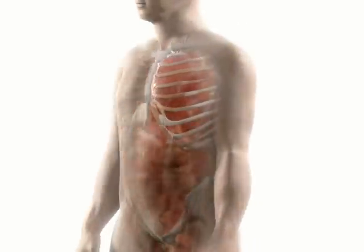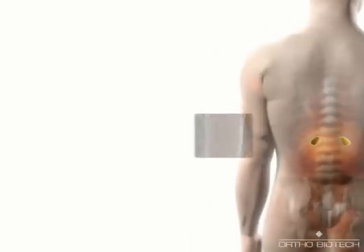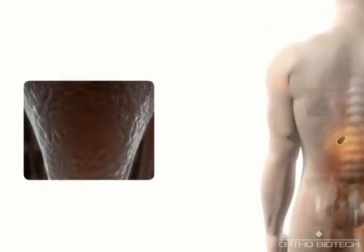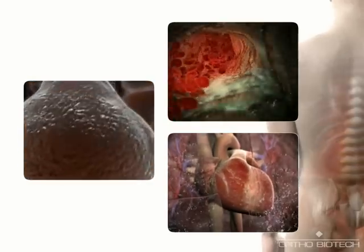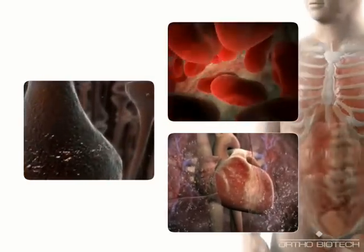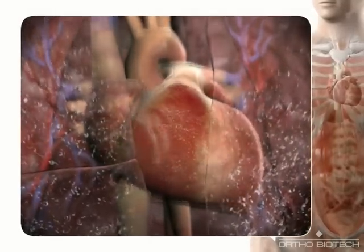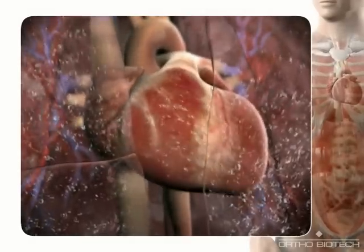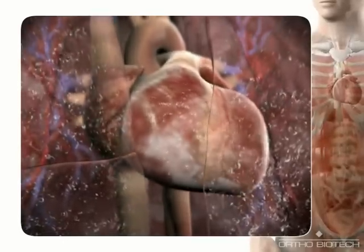Apart from the activity of the RAAS, the body tries to maintain blood pressure using other mechanisms, such as releasing epinephrine from the adrenal glands and norepinephrine from sympathetic nerve endings. These catecholamines increase heart rate and contractility, in addition to causing arterial and venous constriction. Over time, chronic volume overload and the activity of angiotensin 2, aldosterone and endothelin stimulate pathologic cardiac remodeling. The interstitial fibrosis and myocyte apoptosis associated with cardiac remodeling decrease heart wall elasticity, further inhibiting the heart's ability to relax and pump effectively.